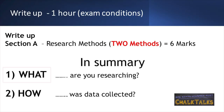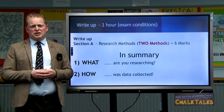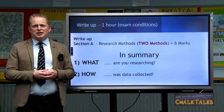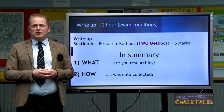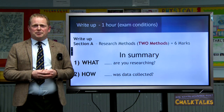In summary for Section A, first consider the what: what is it that you're researching, and what methods have you used to collect your information? Then consider the how: how was your data collected, what steps did you take, and what sources of information did you use? Give as clear an account of this as you possibly can.